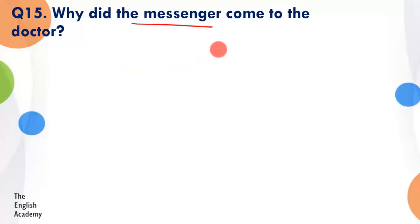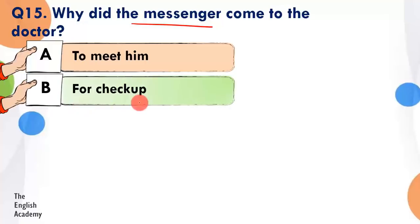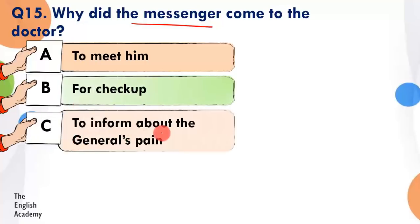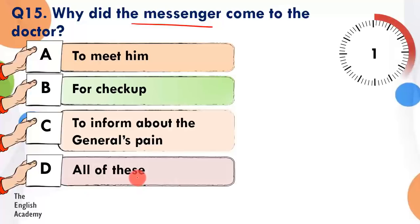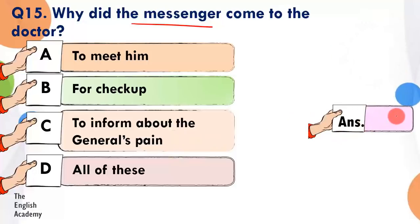Question number 15: Why did the messenger come to the doctor? Option A: to meet him. Option B: for checkup. Option C: to inform about the general's pain. Option D: all of these. The answer is Option C — woh doctor Sadao ko batane aaya tha, unhein bulane aaya tha, kyunki general pain mein tha.